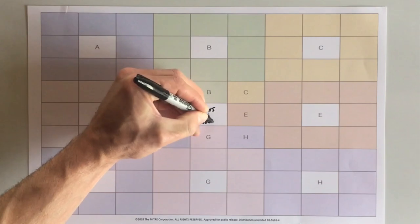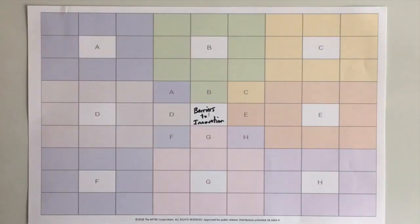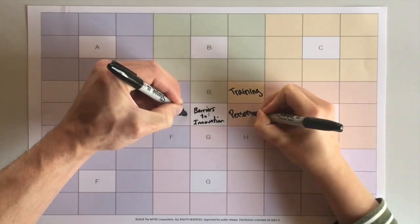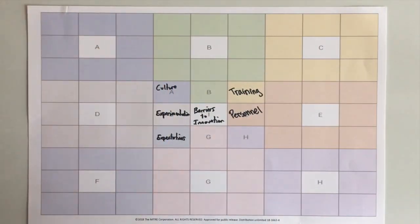Start by filling out the central square with a problem to be solved or a theme to be examined. Brainstorm related components, solutions, or themes and put them in the boxes immediately surrounding the center box. This is considered the center blossom.